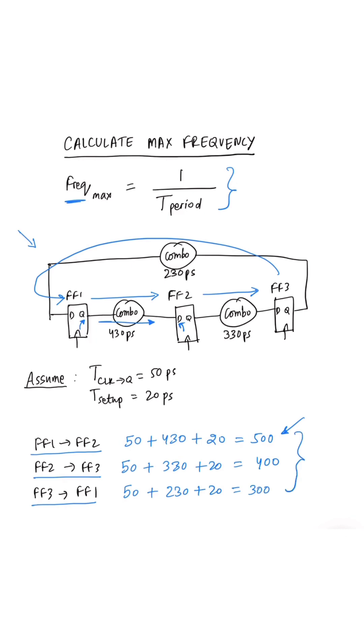For all three timing paths, we know the minimum clock period which is required for those timing paths to work properly. If the clock period is any less than these numbers, there will be a setup timing violation on those paths. Based on these three paths, we know that the slowest path is the FF1 to FF2 path.